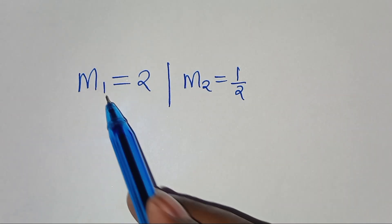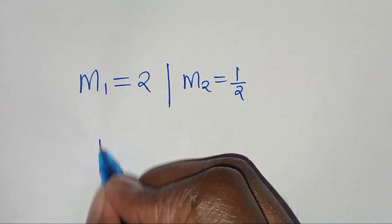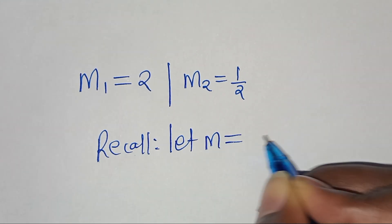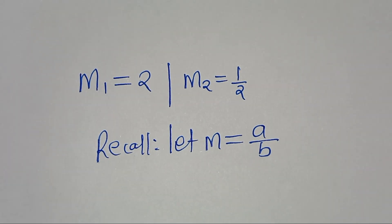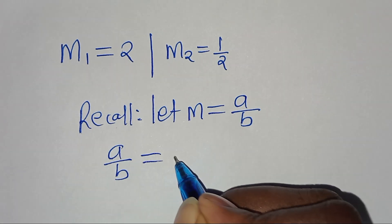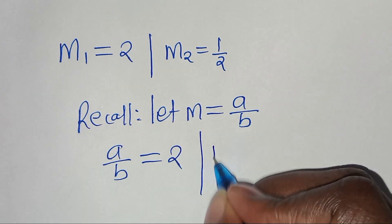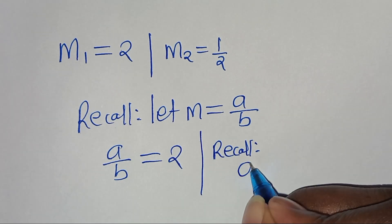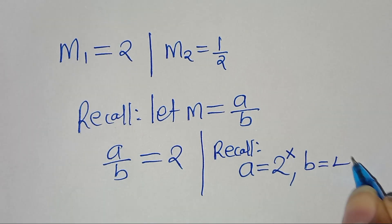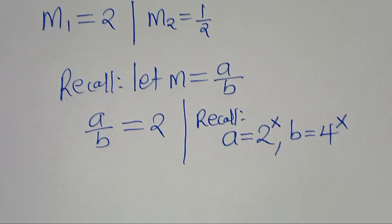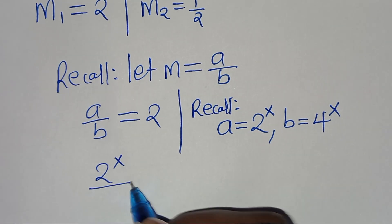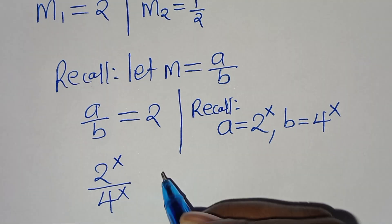Now we have m₁ equal to 2 and m₂ equal to one half. Recall that we assigned m equal to a over b. Substituting a over b, starting with m₁: a over b equals 2. Recall that a equals 2 to the power of x and b equals 4 to the power of x. So substituting: 2 to the power of x divided by 4 to the power of x equals 2.